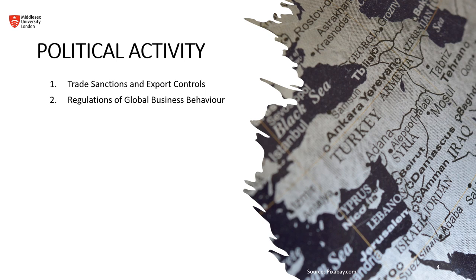Regulations of global business behavior refers to the rules and standards that govern how companies operate in the global marketplace. These regulations can cover a wide range of issues including anti-corruption measures, environmental standards, labor rights, and fair competition laws. Businesses operating internationally must navigate a complex web of local and international laws. For example, the Foreign Corrupt Practices Act, or FCPA, in the United States prohibits companies from bribing foreign officials to obtain or retain business. Adherence to these regulations is crucial to maintain reputations, avoid legal penalties, and contribute to sustainable and ethical global commerce.